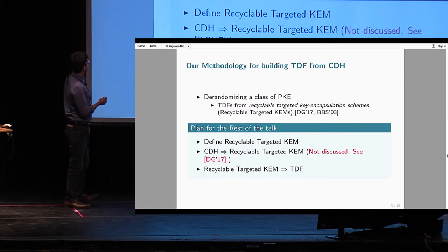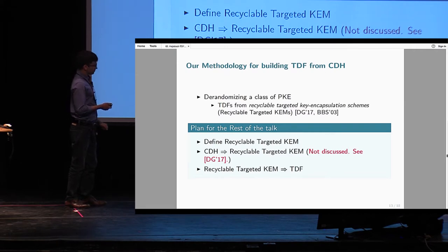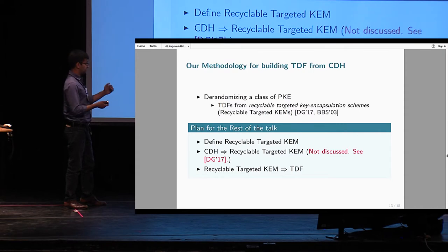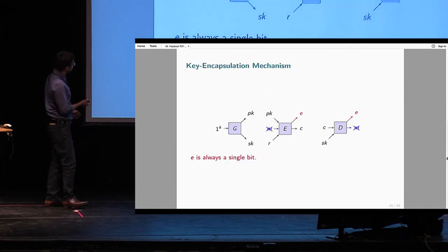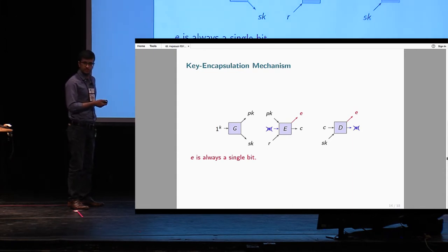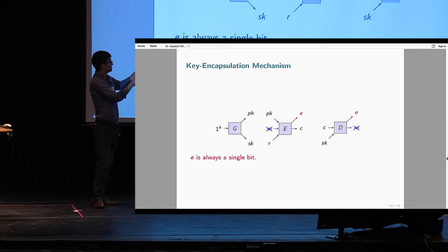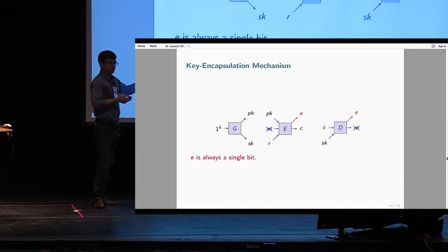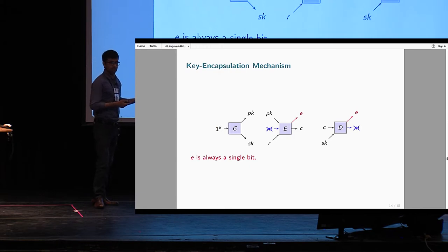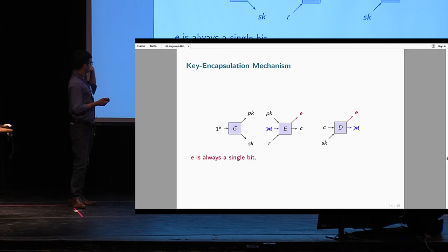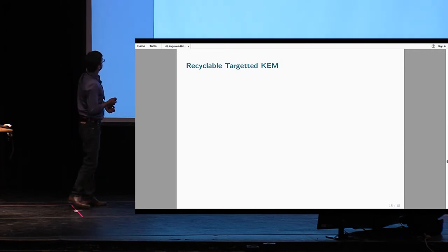Let me tell you what recyclable targeted KEM is. It is a kind of key encapsulation mechanism enhanced with some properties. A KEM scheme is defined exactly like a public encryption scheme with the only difference that the encapsulation algorithm does not take any plaintext message M as input — it takes a public key PK and some randomness R and gives a ciphertext C encapsulating a key E. If you have the right secret key you can derive the value of E from C. Throughout my talk I'll assume E is a single bit.